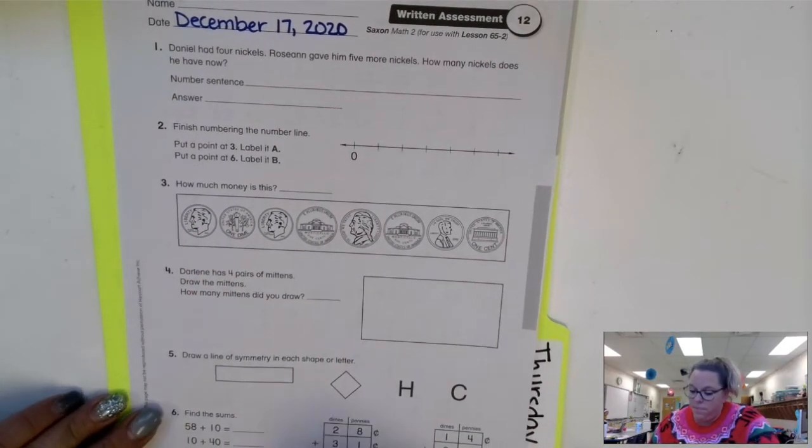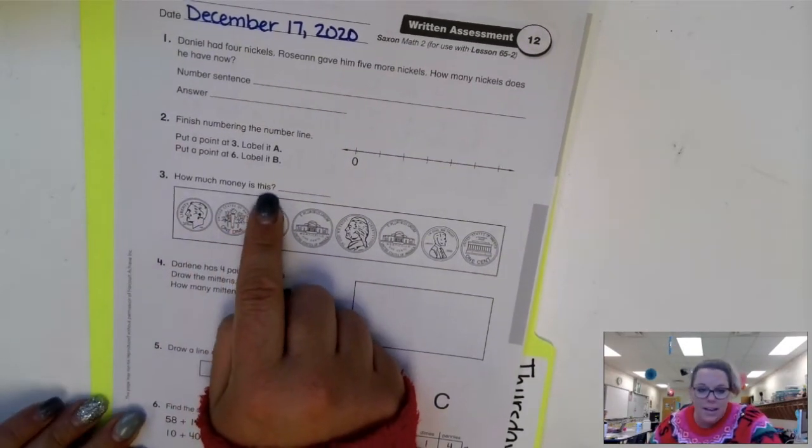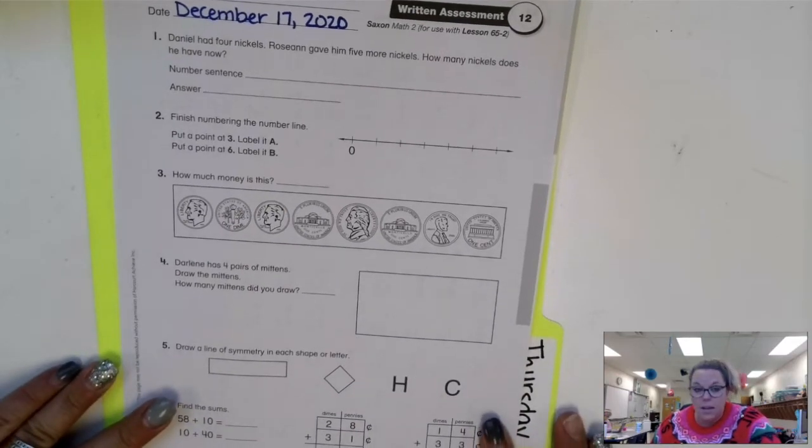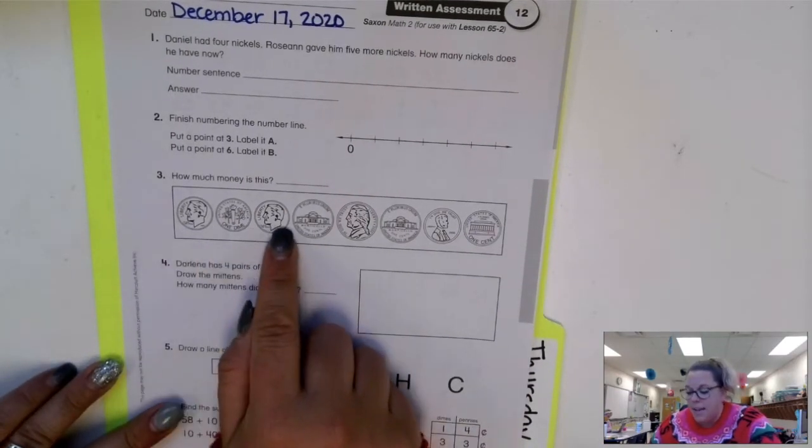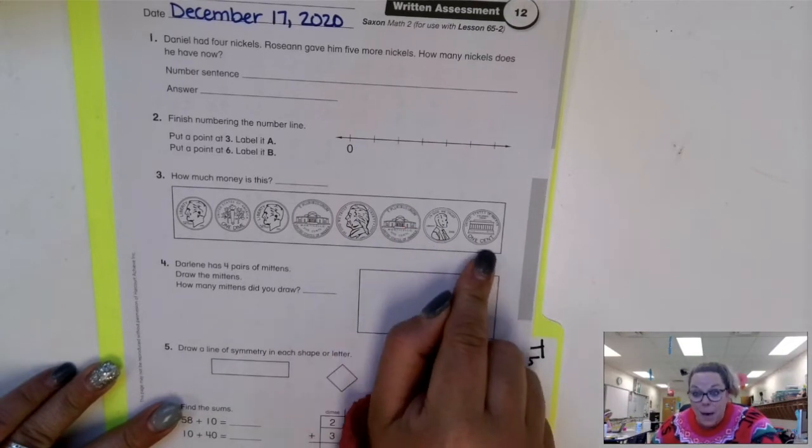Number three. How much money is this? Take a look at your money. I see I have dimes, nickels, and pennies today.